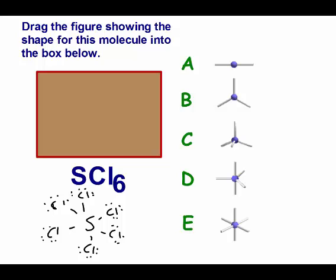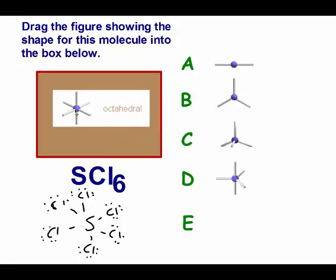The structure for SCl₆ has six things coming off, giving an octahedral shape with a square in the center and bond angles of 90 degrees. The shape is octahedral, also called square bipyramidal.